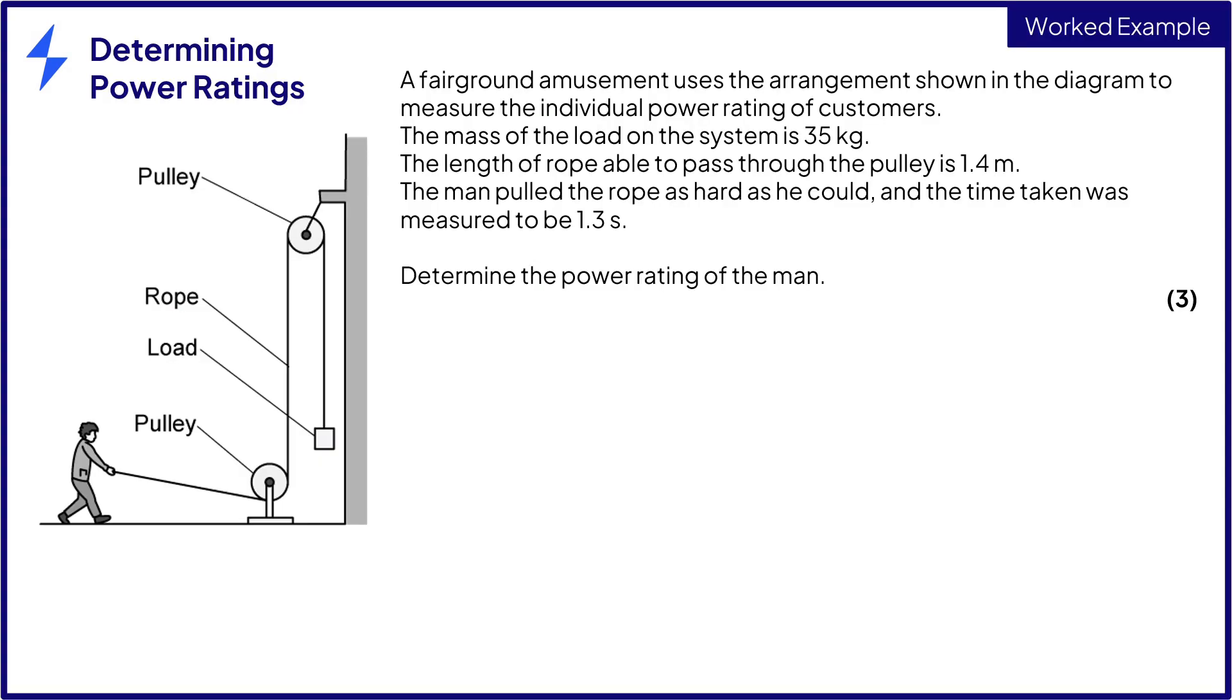Let's take a look at an example exam question. A fairground amusement uses the arrangement shown in the diagram to measure the individual power rating of customers. The mass of the load on the system is 35 kilograms.